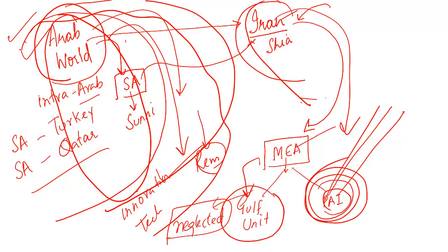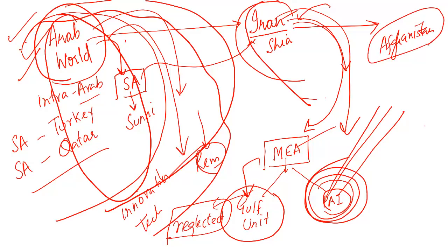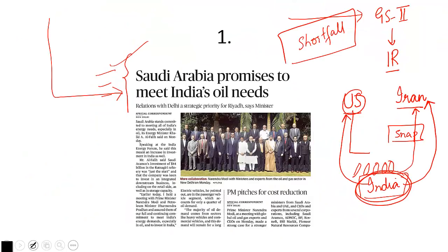Iran, except for crude oil and cultural exchanges, does not offer much to India compared to the Arab world bloc. However, others argue we should maintain good relations with Iran because it is a gateway to the Middle East and plays a very important role in Afghanistan. If we need a foothold in Afghanistan, we need good relations with Iran. The Saudi statement — promising to meet India's oil needs — must be understood within this larger geopolitical equation.